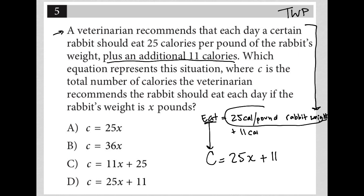So here's my equation, pretty simple. The total amount of calories should be 25 calories per pound times the pounds or the weight of the rabbit itself, plus an additional 11 calories as well. So c equals 25x plus 11, and that is choice D.